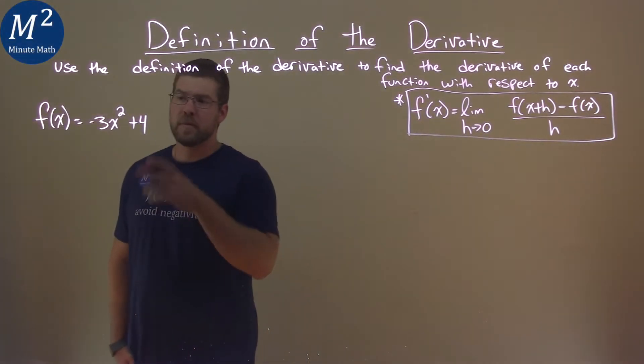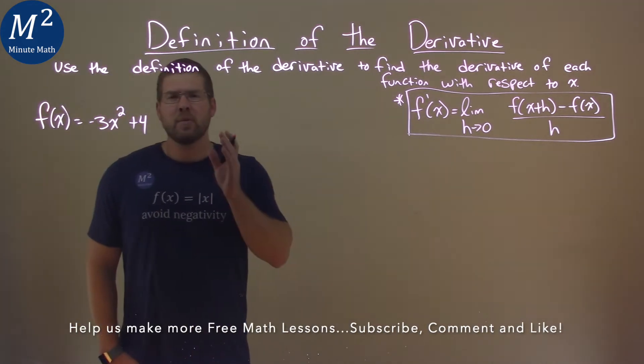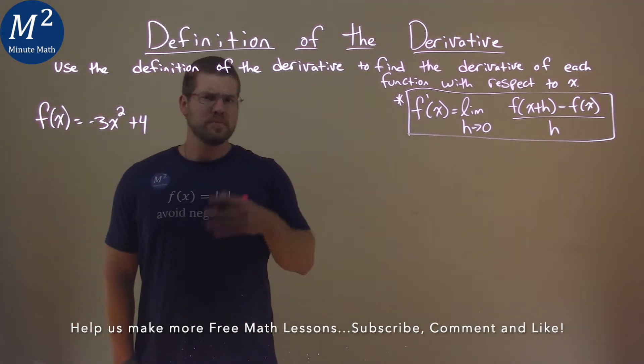We're given this problem right here. f of x is equal to negative 3x squared plus 4, and we have to use the definition of the derivative to find the derivative.